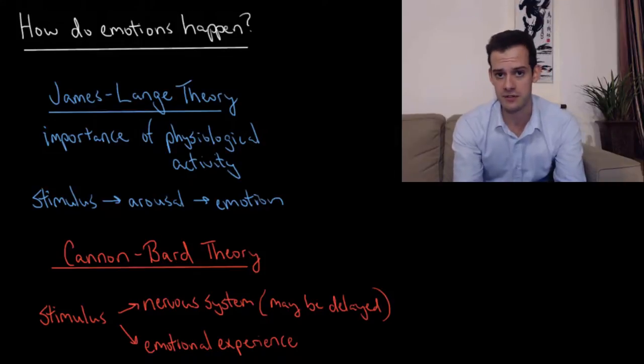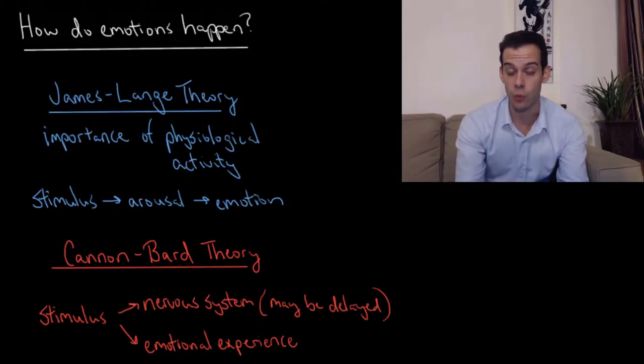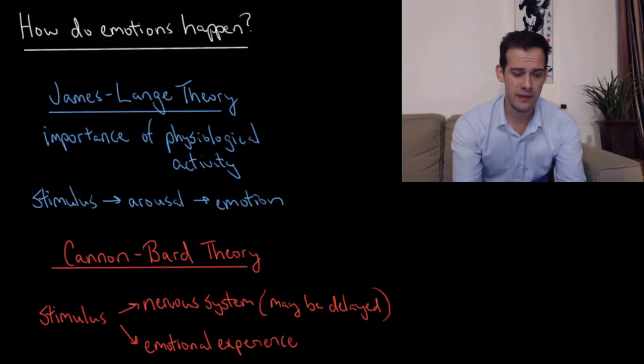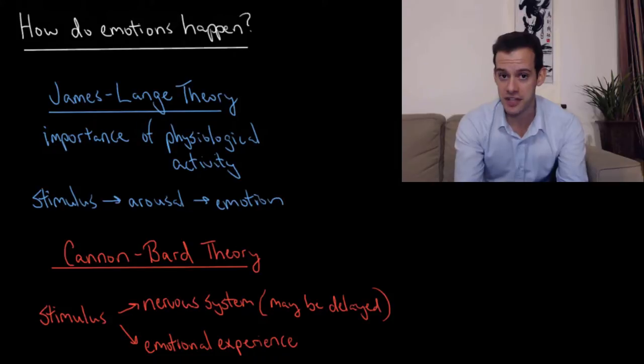Another criticism of the James-Lange theory leads us to the next theory, which is the Cannon-Bard theory of emotion, named after Walter Cannon and Philip Bard. The idea of the Cannon-Bard theory is that we have a stimulus, but that it causes the activation of the nervous system. It causes that physiological arousal, but it also causes the emotional experience, and that the two are separate.